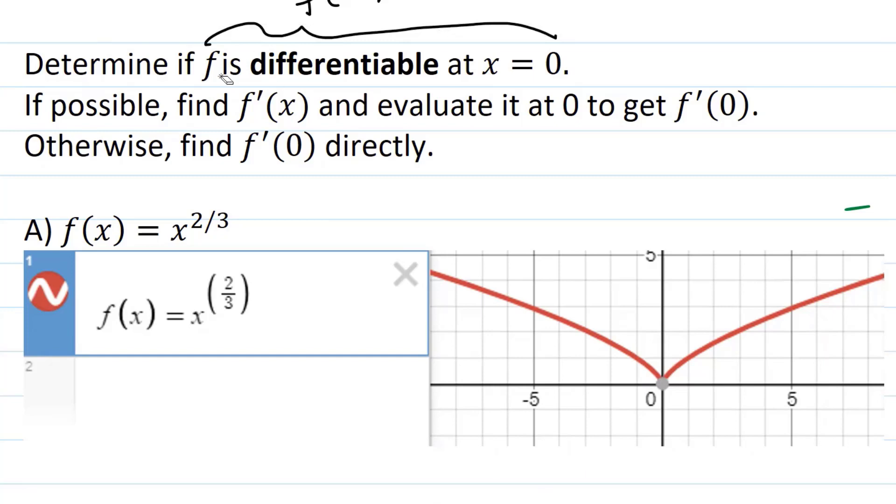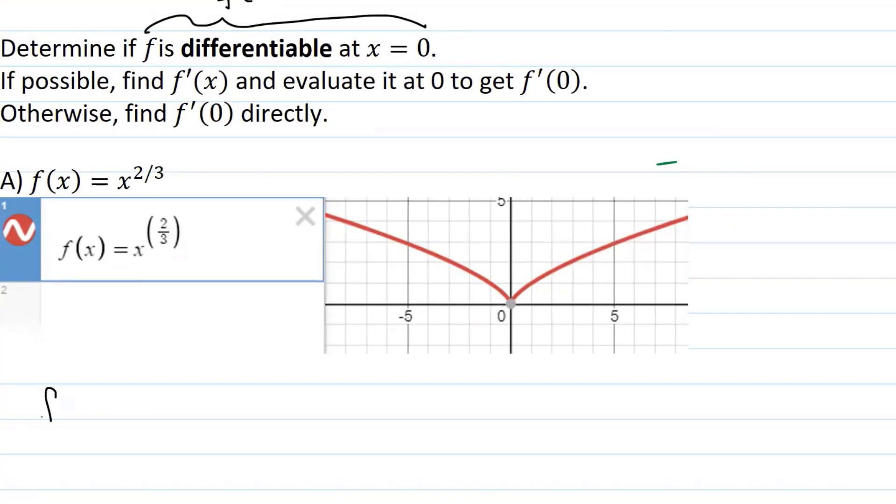Now it says to find f prime of x. That means taking the limit of the difference quotient with the x left in it, if possible. So let's see if it's possible. f prime of x equals, and I'm going to write down the definition of the limit as h goes to zero, f of x plus h minus f of x divided by h.